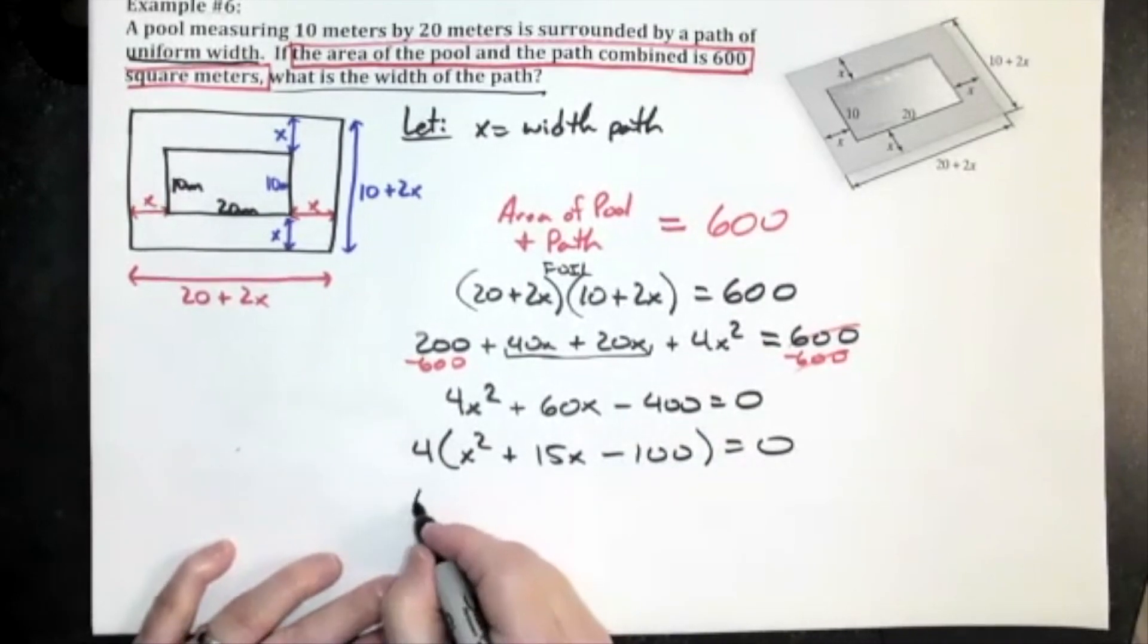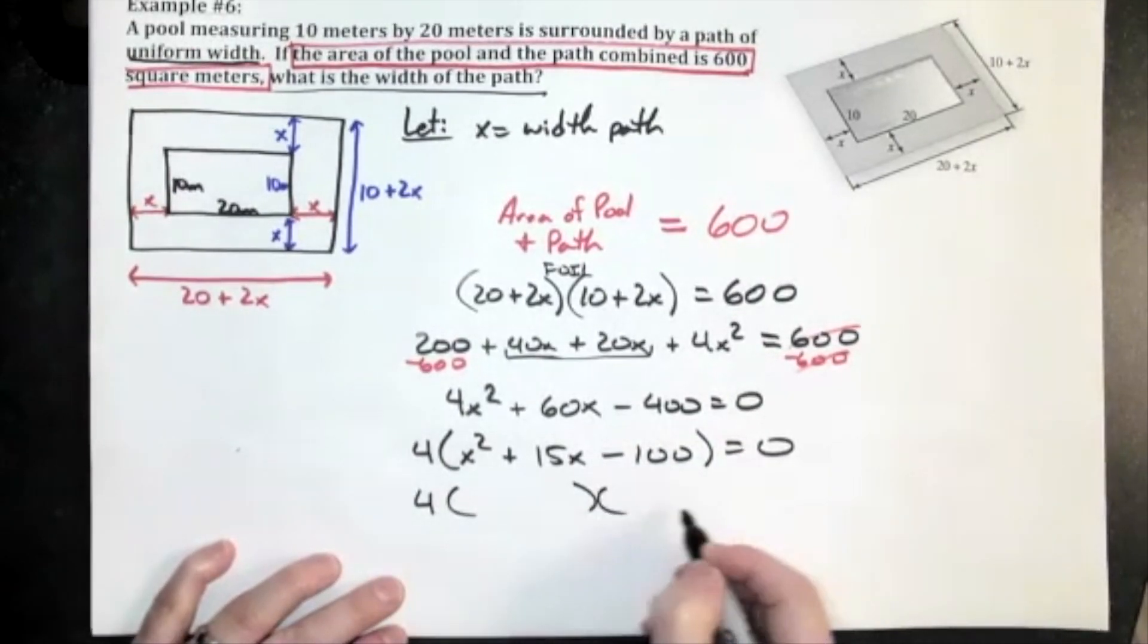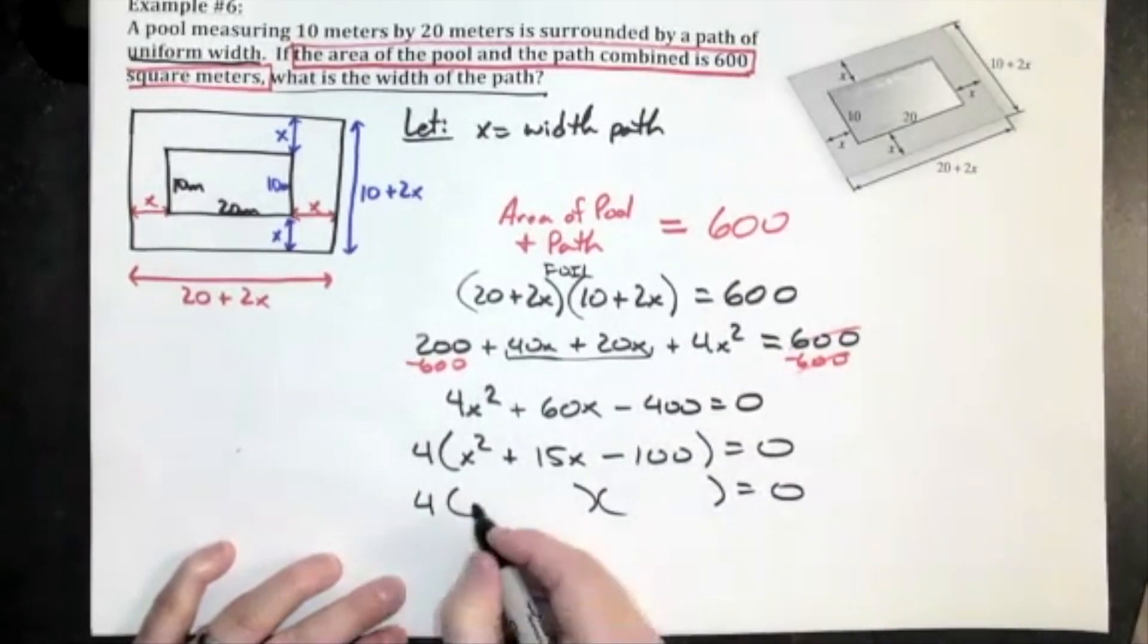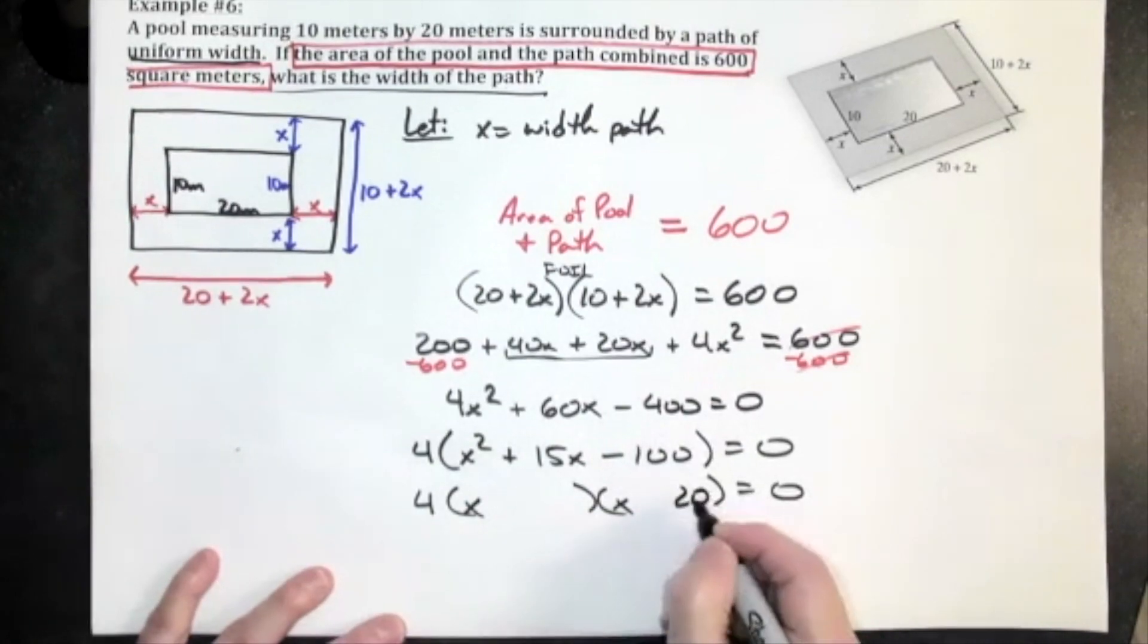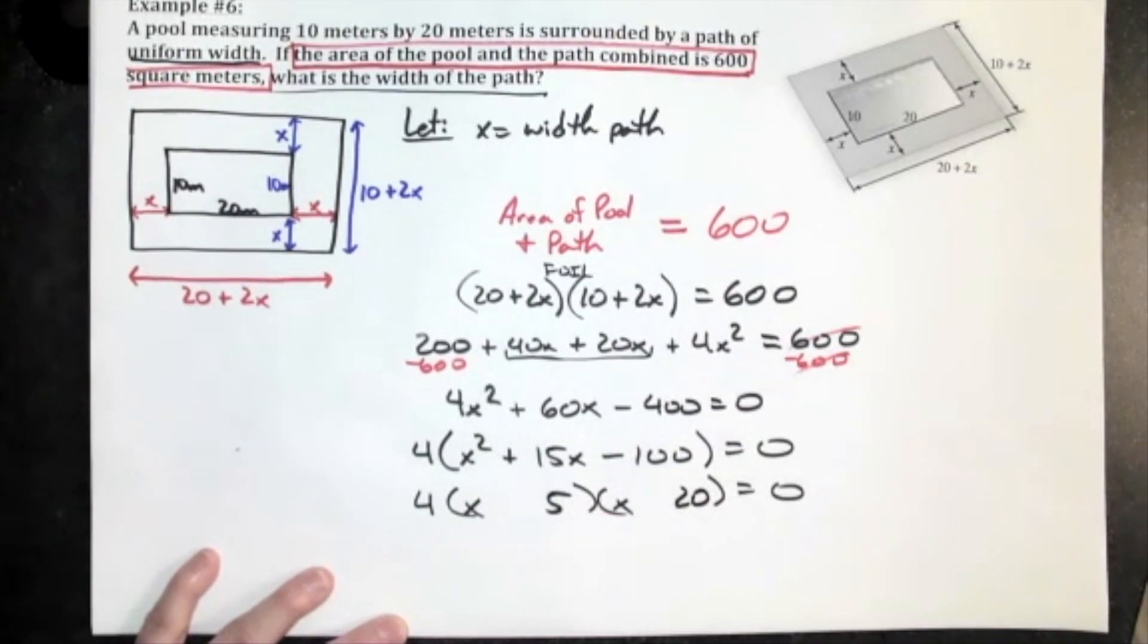The 4 just stays there, it doesn't do anything. I'm going to factor that trinomial on the inside, an x and an x. Now probably 20 times 5, 20 here, 5 here. I need a positive 15, so that means the 20, it's got to be the positive one. This is going to be the negative one.